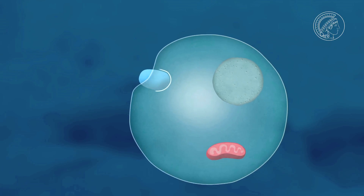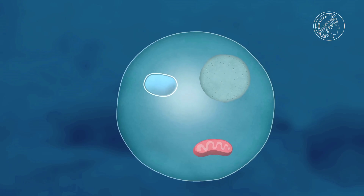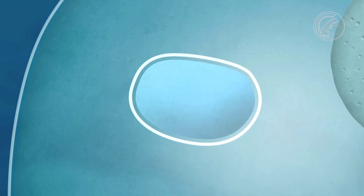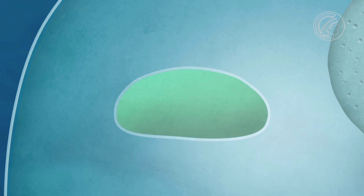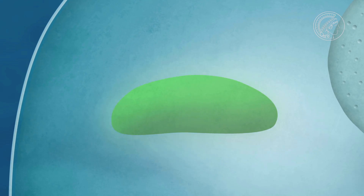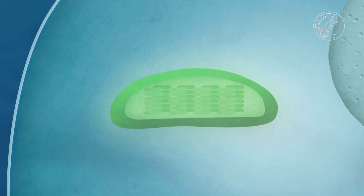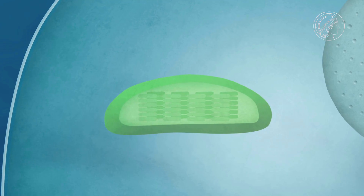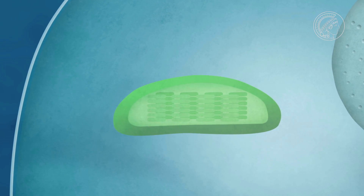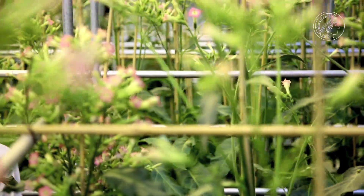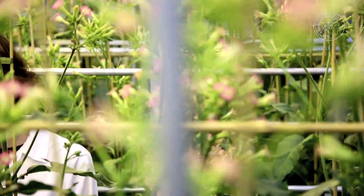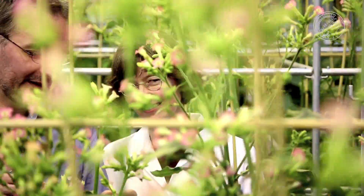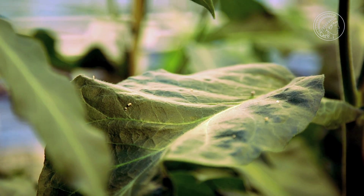Millions of years later, single-cell organisms — this time cyanobacteria — were also swallowed up. They can absorb energy from sunlight, a huge advantage during the course of evolution. They too lost their independence and became organelles within plant cells, known as chloroplasts. A sign of their bacterial origins: both mitochondria and chloroplasts have their own DNA, which differs from that in the cell nucleus.